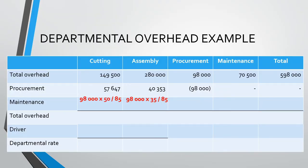Notice how we have allocated the full 98,000 Rand to our cutting and assembly departments — rounded to the nearest whole Rand. If we add the 57,647 Rand and the 40,353 Rand, we arrive back at the procurement department total of 98,000 Rand. Note that there was no allocation to our maintenance department.